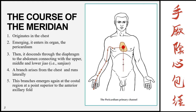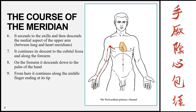The course of this meridian is that it originates in the chest. It emerges and enters its organ, the pericardium. It then descends through the diaphragm to the abdomen, connecting with the upper, middle and lower jiaos. There is a branch which arises from the chest and runs laterally, emerging at the costal region at a point superior to the anterior axillary fold. It then ascends to the axilla and descends the medial aspect of the upper arm, between the lung and heart meridians.